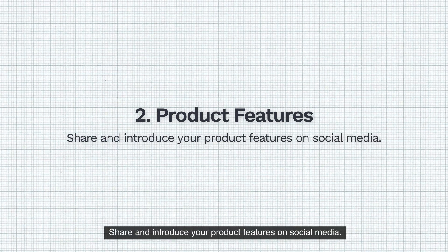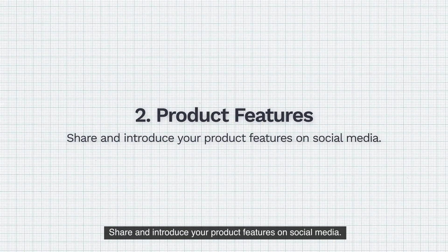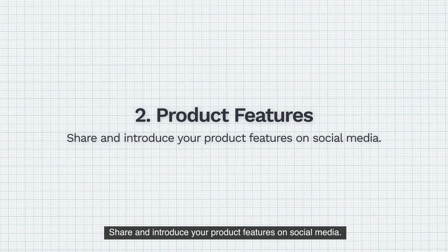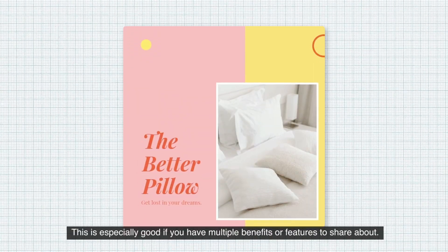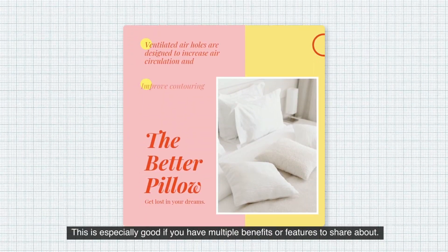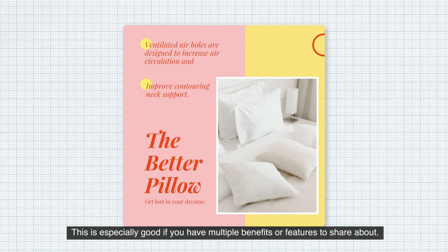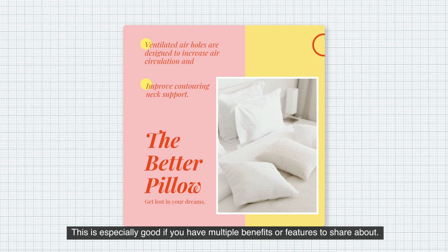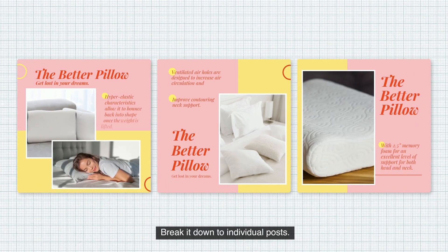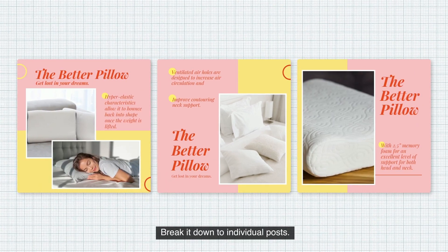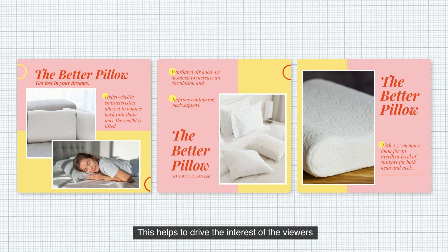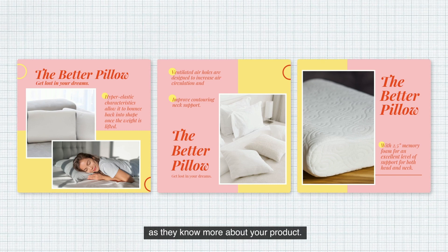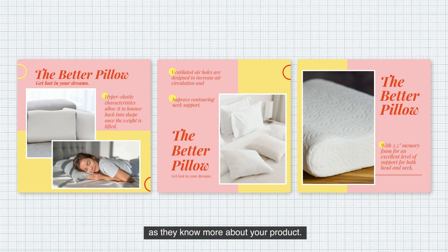Two: Product Features. Share and introduce your product features on social media. This is especially good if you have multiple benefits or features to share about. Break it down to individual posts — this helps to drive the interest of the viewers as they learn more about your product.